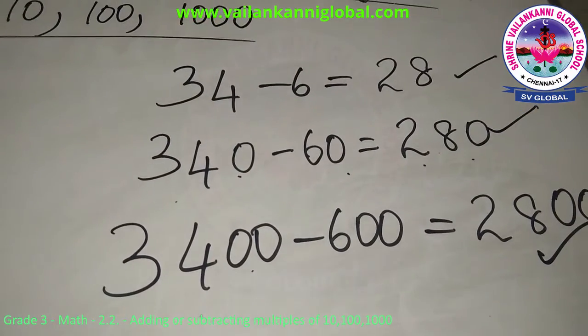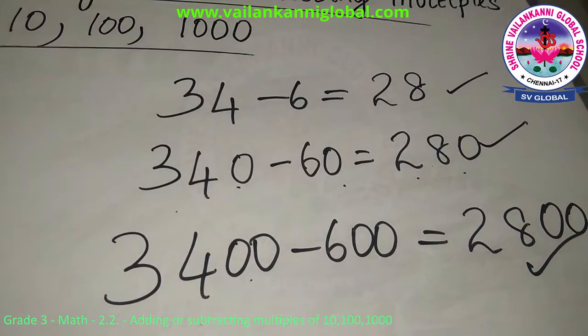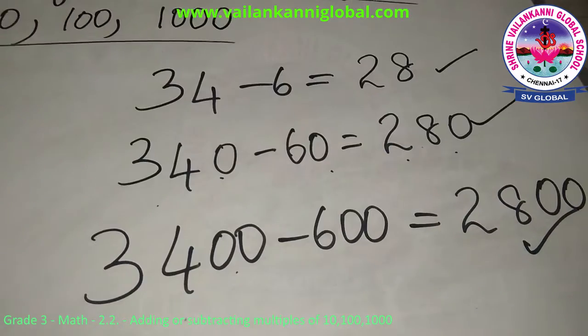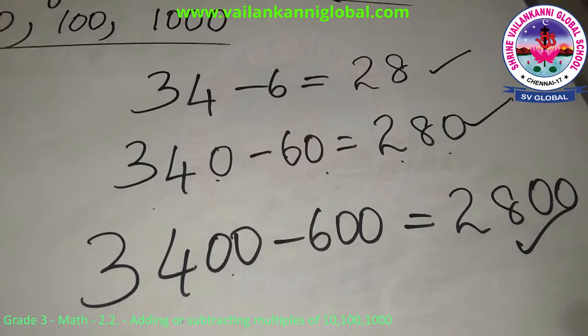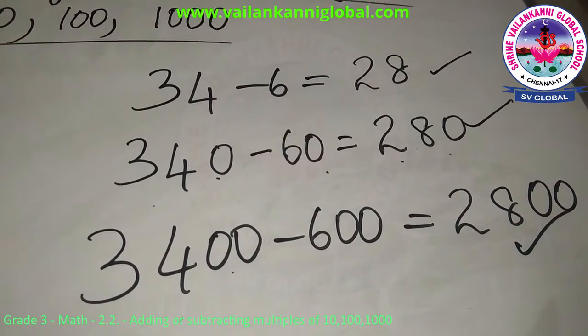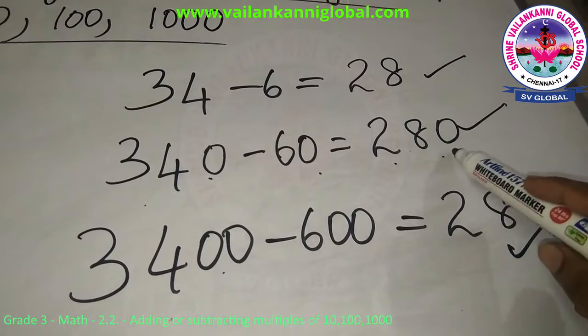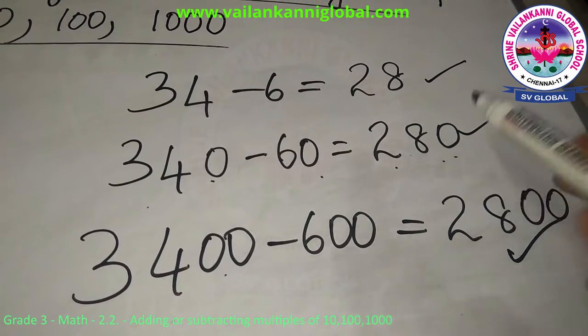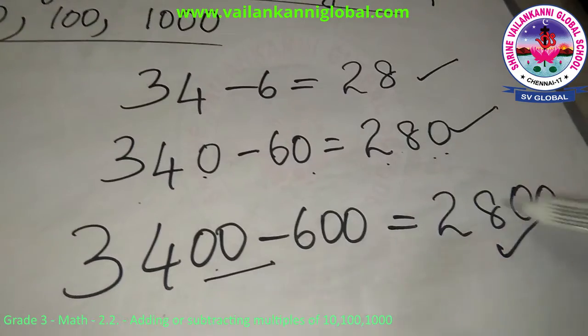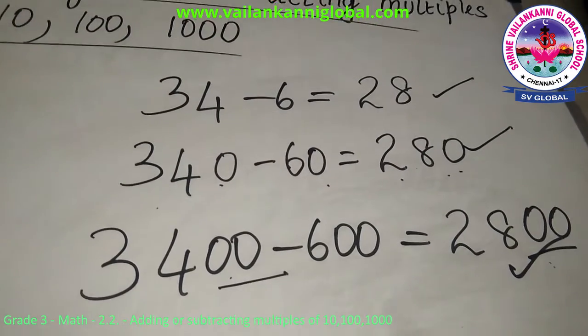So for all the numbers you can do just the addition or subtraction and add how many zeros you are having. If you have one zero just add one zero towards the last. If you are having two zeros add two zeros towards the last.